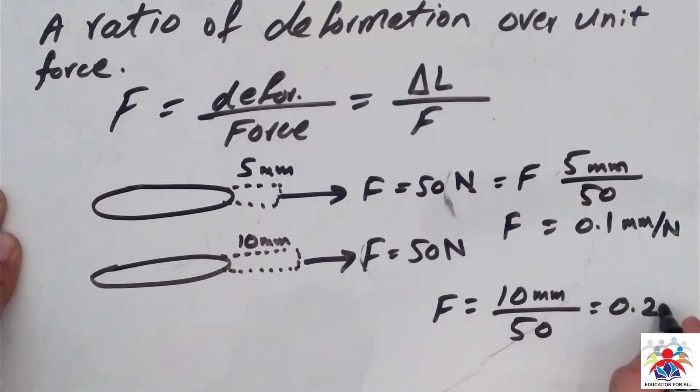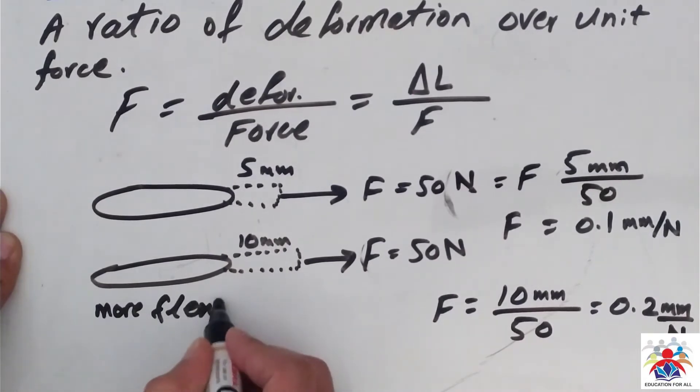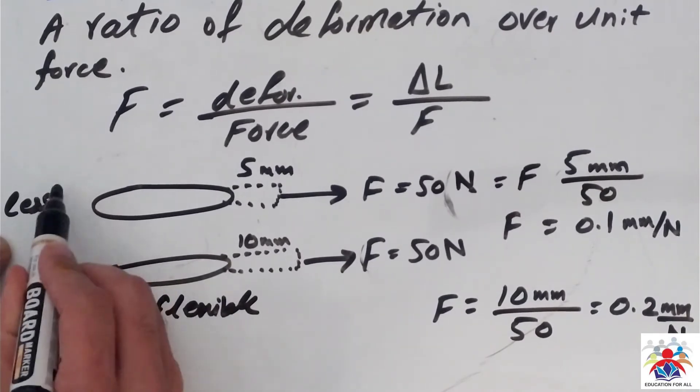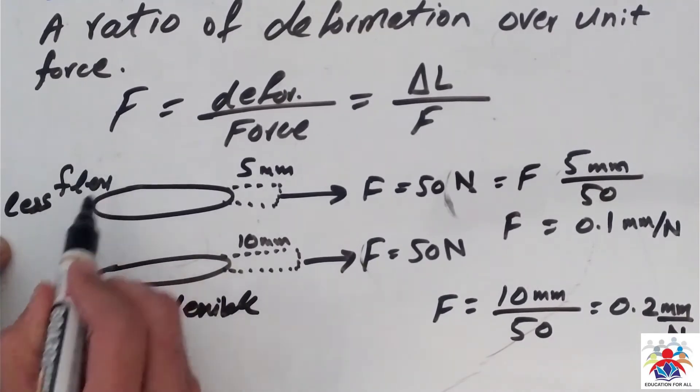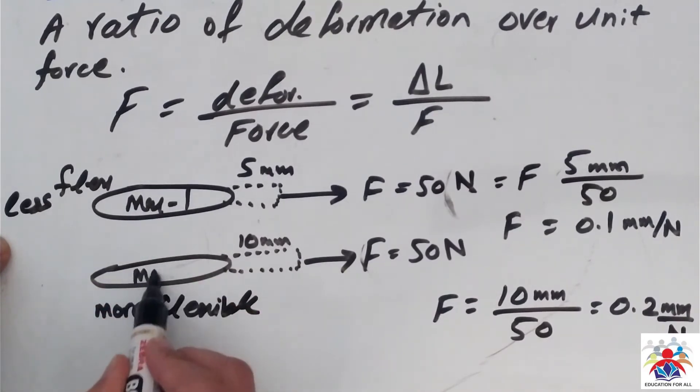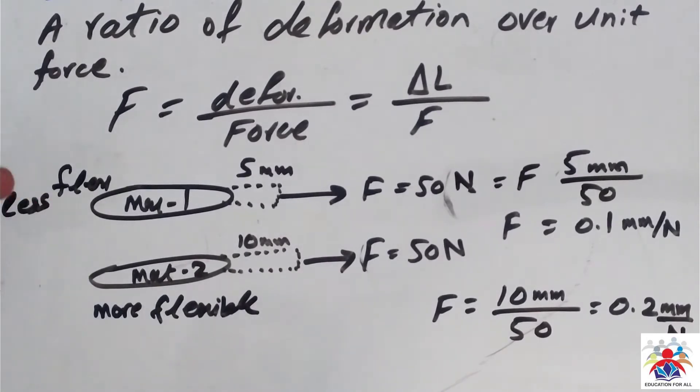So in this case, this is more flexible, and this is less flexible. So this is material one, this is material two. Material one is less flexible than material two.